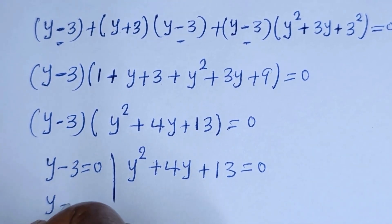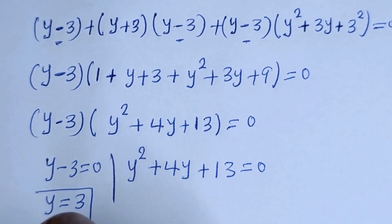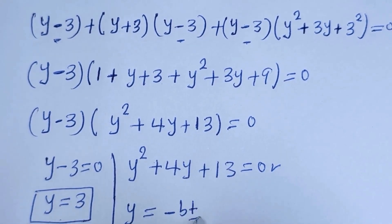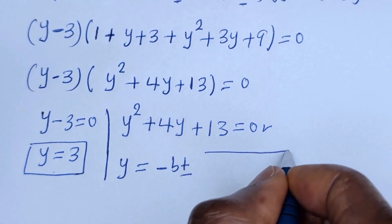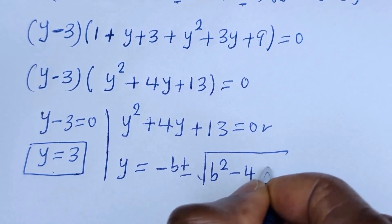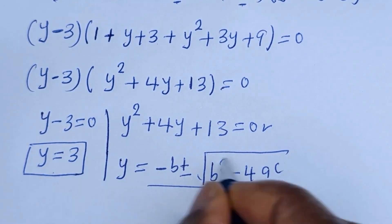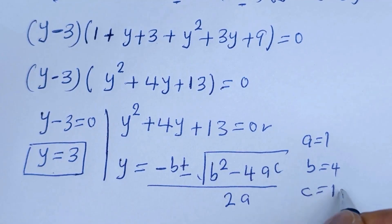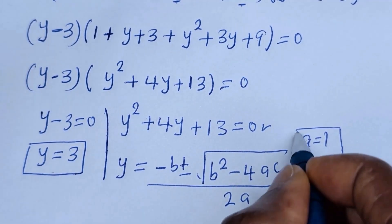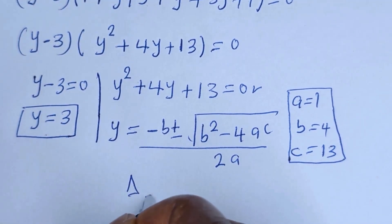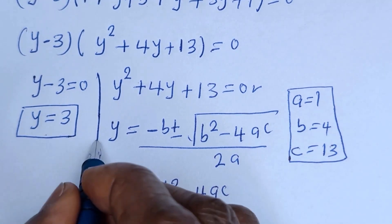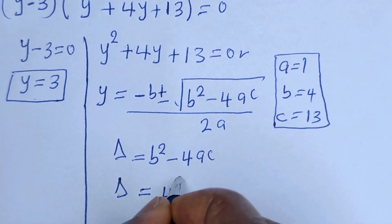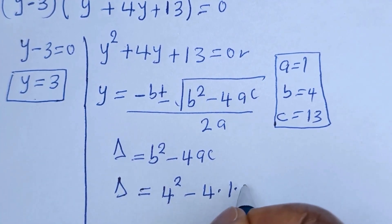From the first case, y is equal to 3. From the second case, this is a quadratic equation. Using the quadratic formula: y equals minus b plus or minus square root of b squared minus 4ac, over 2a. Here a equals 1, b equals 4, c equals 13. The discriminant d equals b squared minus 4ac, that is 4 squared minus 4 times 1 times 13, which is 16 minus 52.